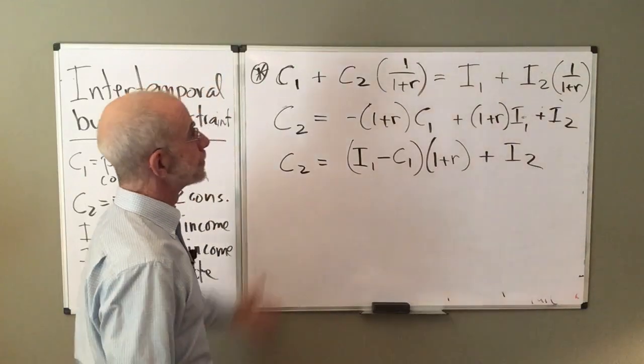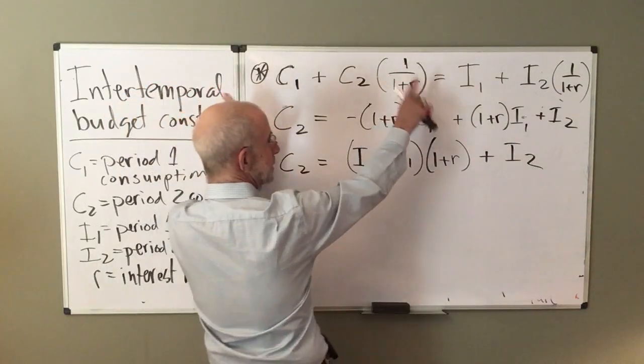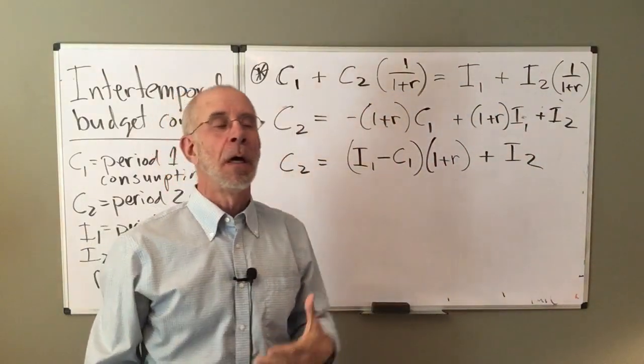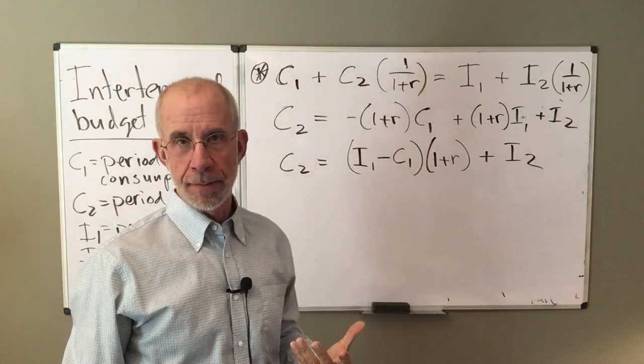So again, discounted consumption on the left, discounted interest income, discounted income on the right-hand side.